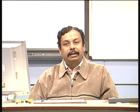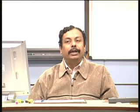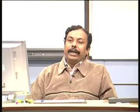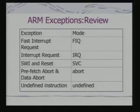In the first class, we had discussed the ARM instruction set and developed an understanding of ARM instruction set architecture. Today, we shall look at other features of the ARM architecture, in particular exception processing and the other components — how they go into the core — and also the internal organizational details of the processor core.